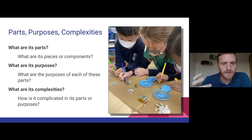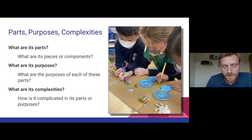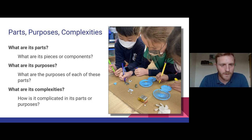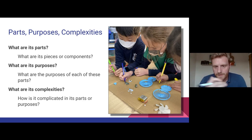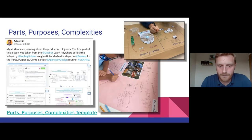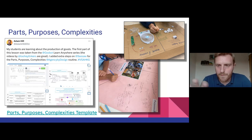This next routine is called Parts, Purposes, Complexities. You might use simpler words with younger students. It's all about looking closely and thinking about how objects work. In this picture, students have actually broken an object apart, which adds value, though you don't have to do that if it's not appropriate. The questions get deeper as you go: first, what are the parts — simply labelling them; what are the purposes of each of those parts; and then how is it complicated in the way those parts work together? A great routine for thinking about all the objects around them and how they work.